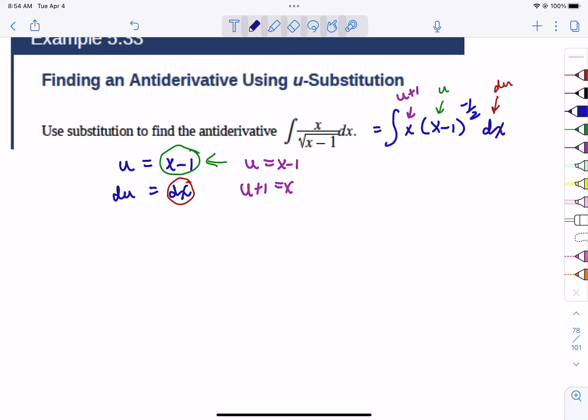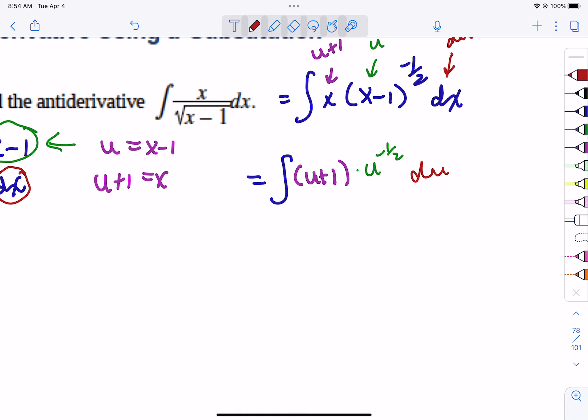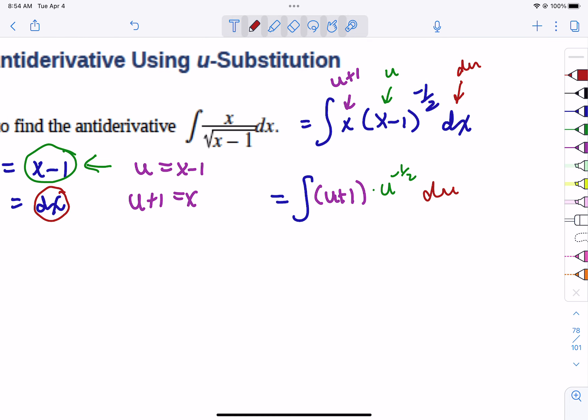Now, once we put that in there, watch what happens. It will become an integrable sort of thing. We're going to have u plus 1 in parentheses, u to the negative 1/2, and then we're going to have du.